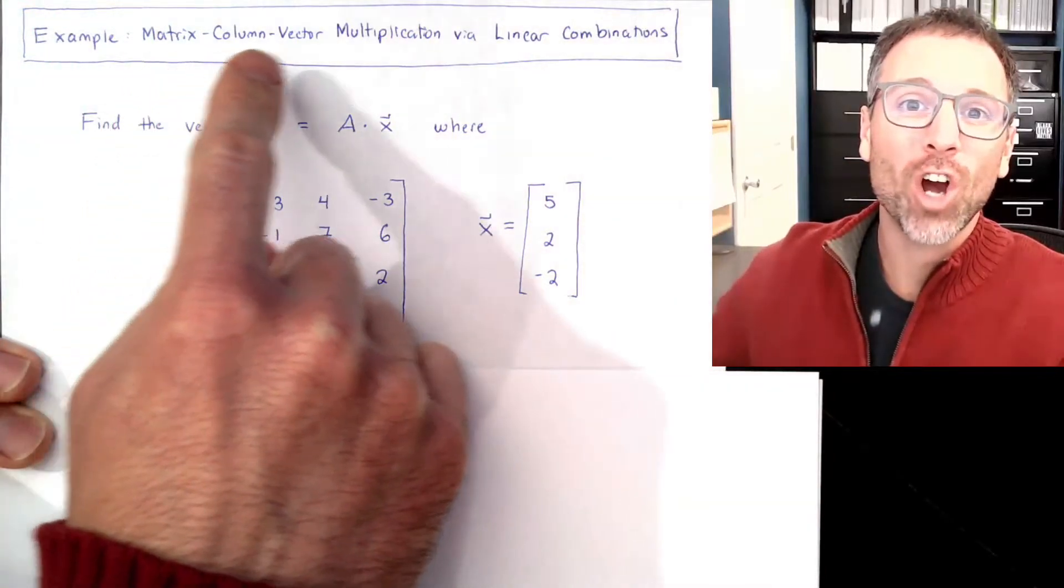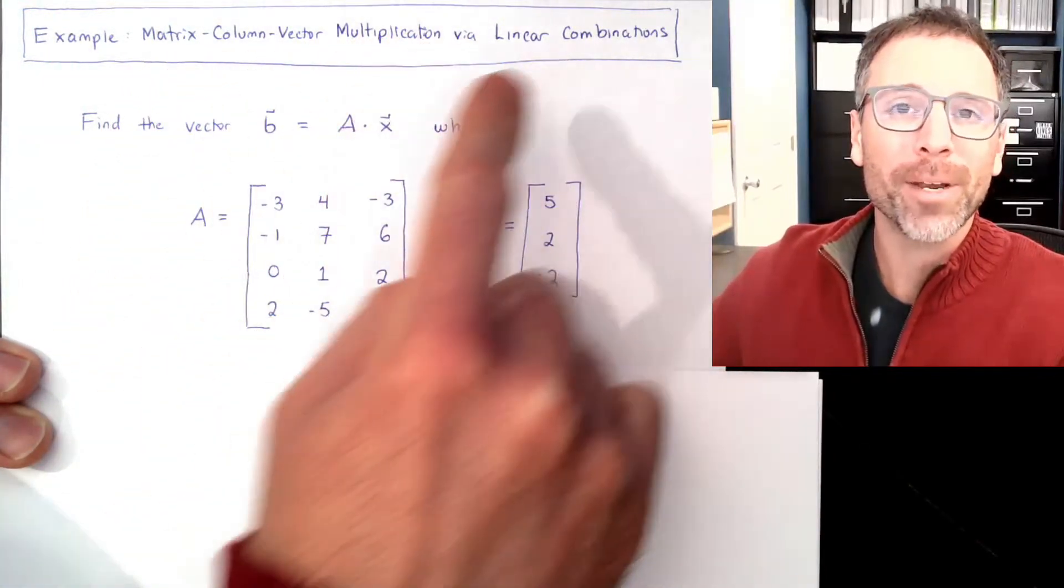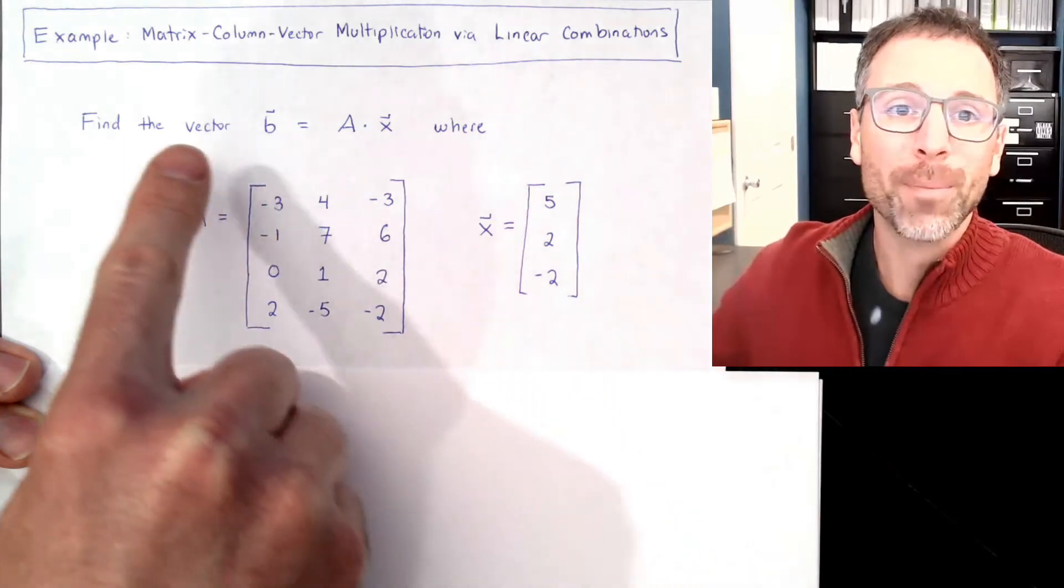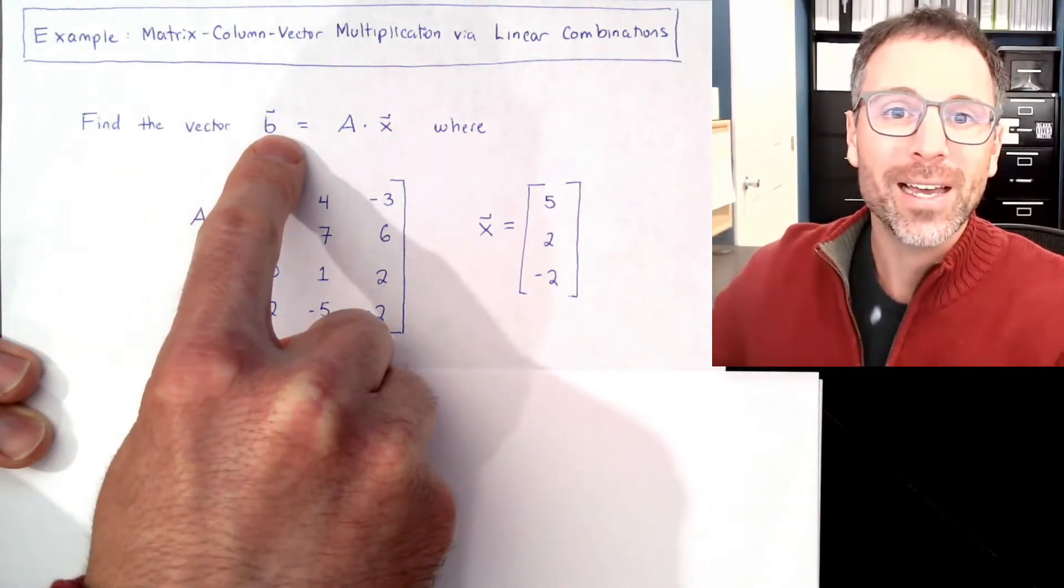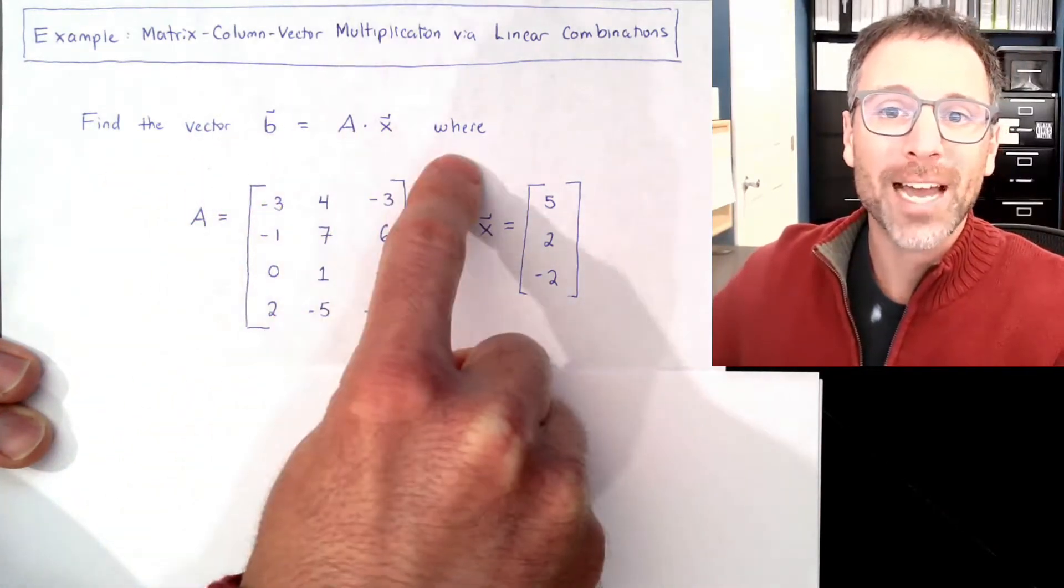Let's use our definition of matrix-column-vector multiplication via linear combinations to do the following example, which is to find the vector b equal to A times x.